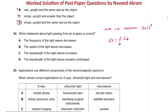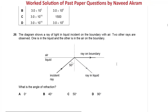Since the speed decreases and frequency remains unchanged, the wavelength must also decrease. So: option A — frequency decreases — is wrong, frequency remains unchanged. Option B — speed of the light waves decreases — yes, this is correct. Option C — wavelength increases — incorrect, wavelength also decreases. Option D — wavelength remains unchanged — also wrong. Therefore, option B is the right answer.